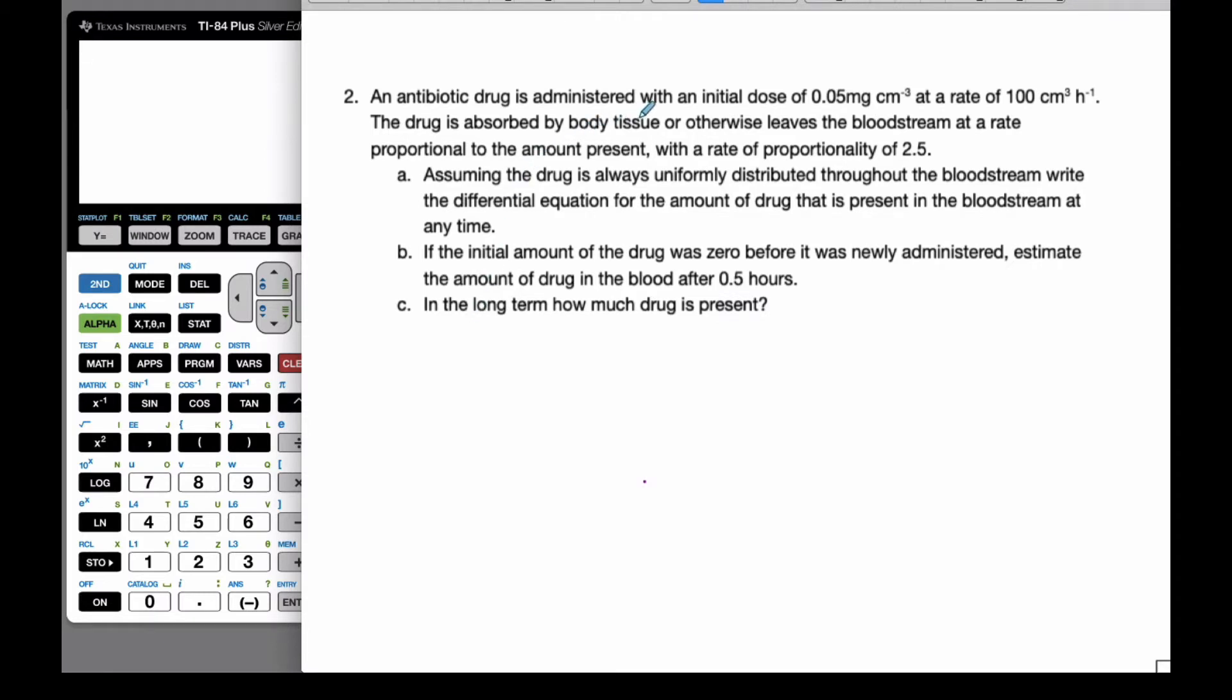So the antibiotic drug is administered with initial dose of 0.05 milligrams per centimeter cubed. So that's a volume. So it adds so much volume, there's so many milligrams at this rate of 100 centimeters cubed per hour, so a certain volume per hour. The drug is absorbed by the body tissue or otherwise leaves the bloodstream at a rate proportional to the amount present with the rate of proportionality of 2.5.